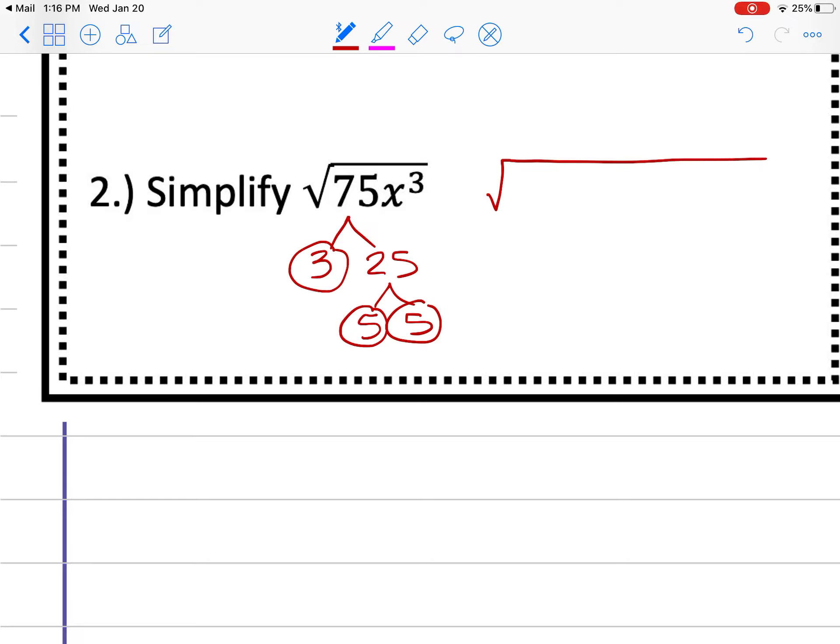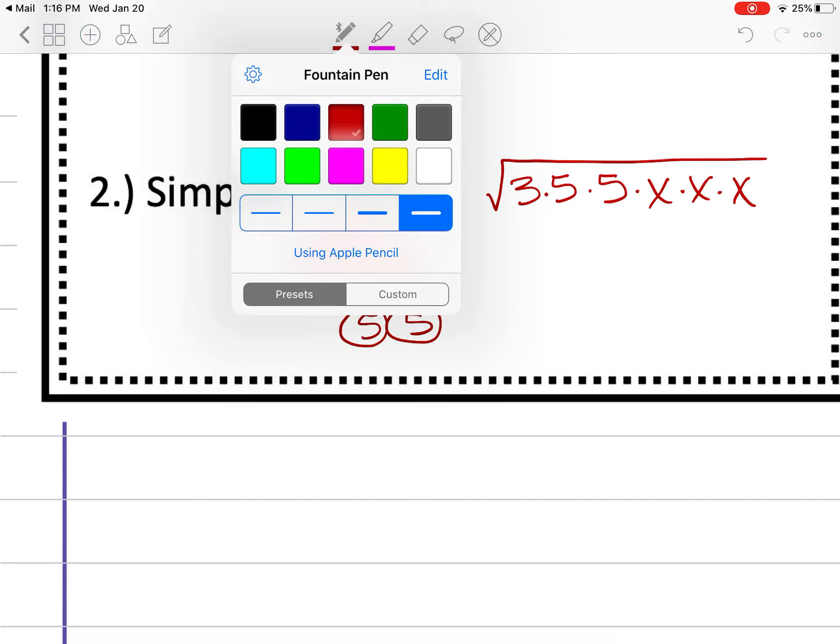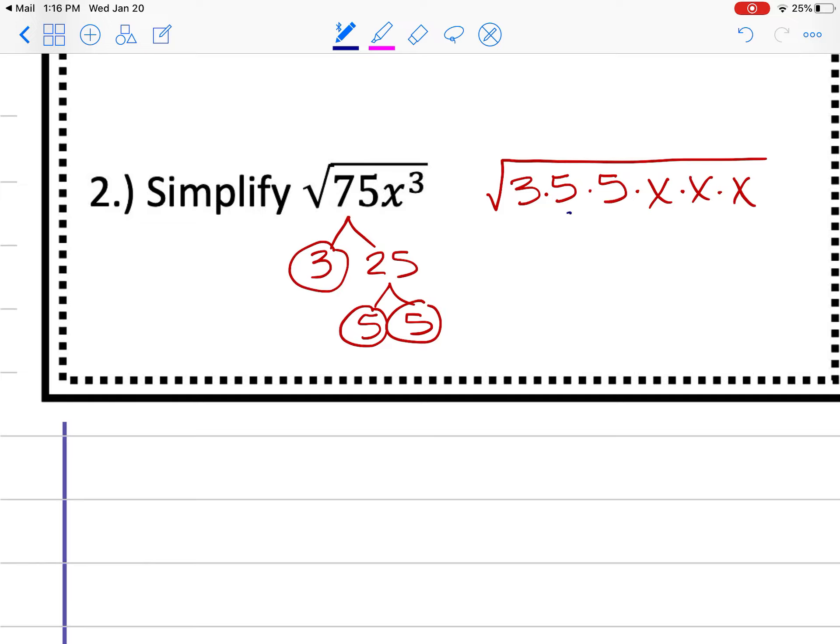So when I go to put this under the radical, remember we put our factors out, but then we're also going to list out our variable, and since it's x to the third, we would have three x's. And at this point, going back to what we did at the very beginning of the year, we're looking for pairs. So I have a pair of fives and I have a pair of x's. The numbers that I didn't underline are going to stay under the radical, so the 3 and the x that are left. The numbers that are going to come out, I have a pair of fives, so one five comes out because one pair. I have a pair of x's, so one x, and there is square root of 75x cubed simplified.